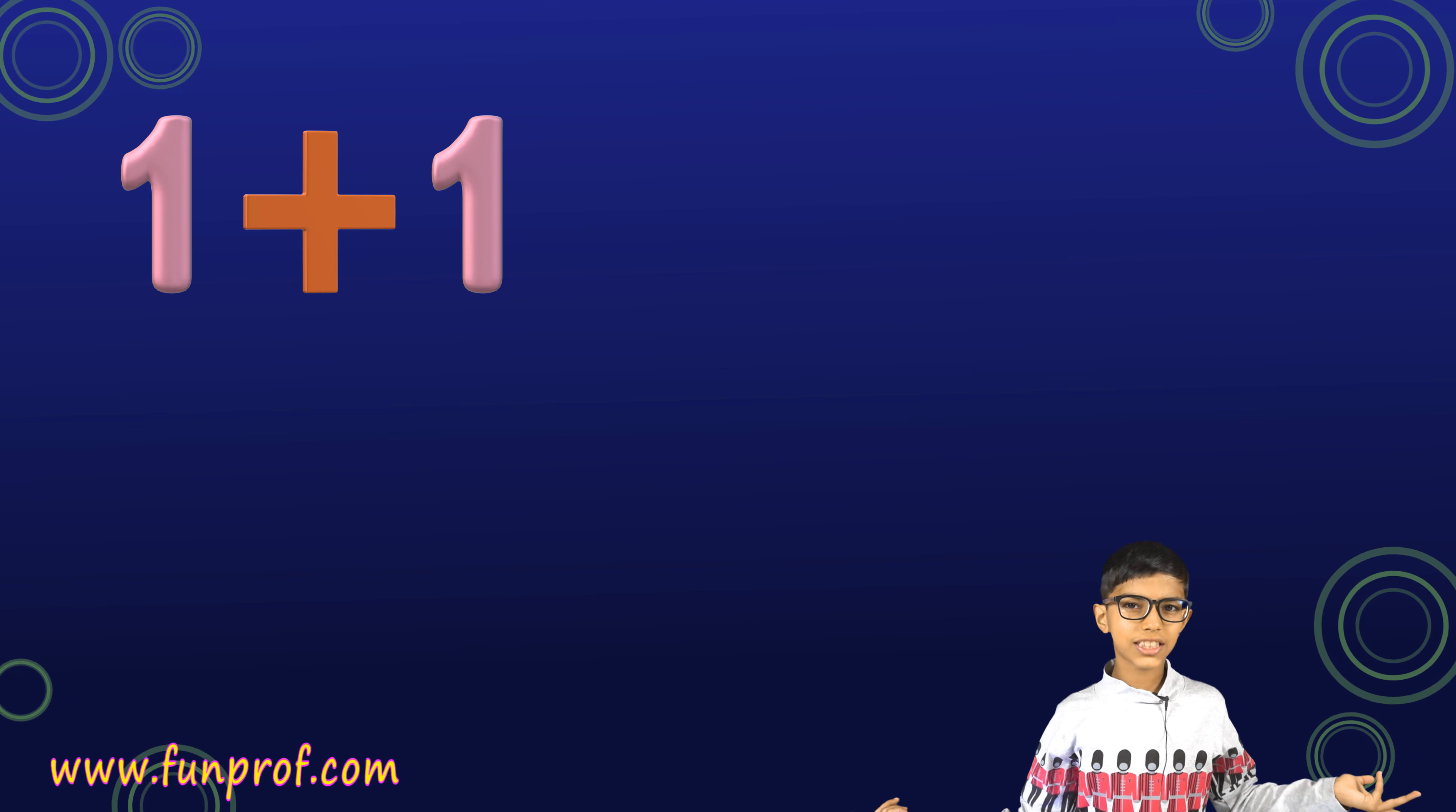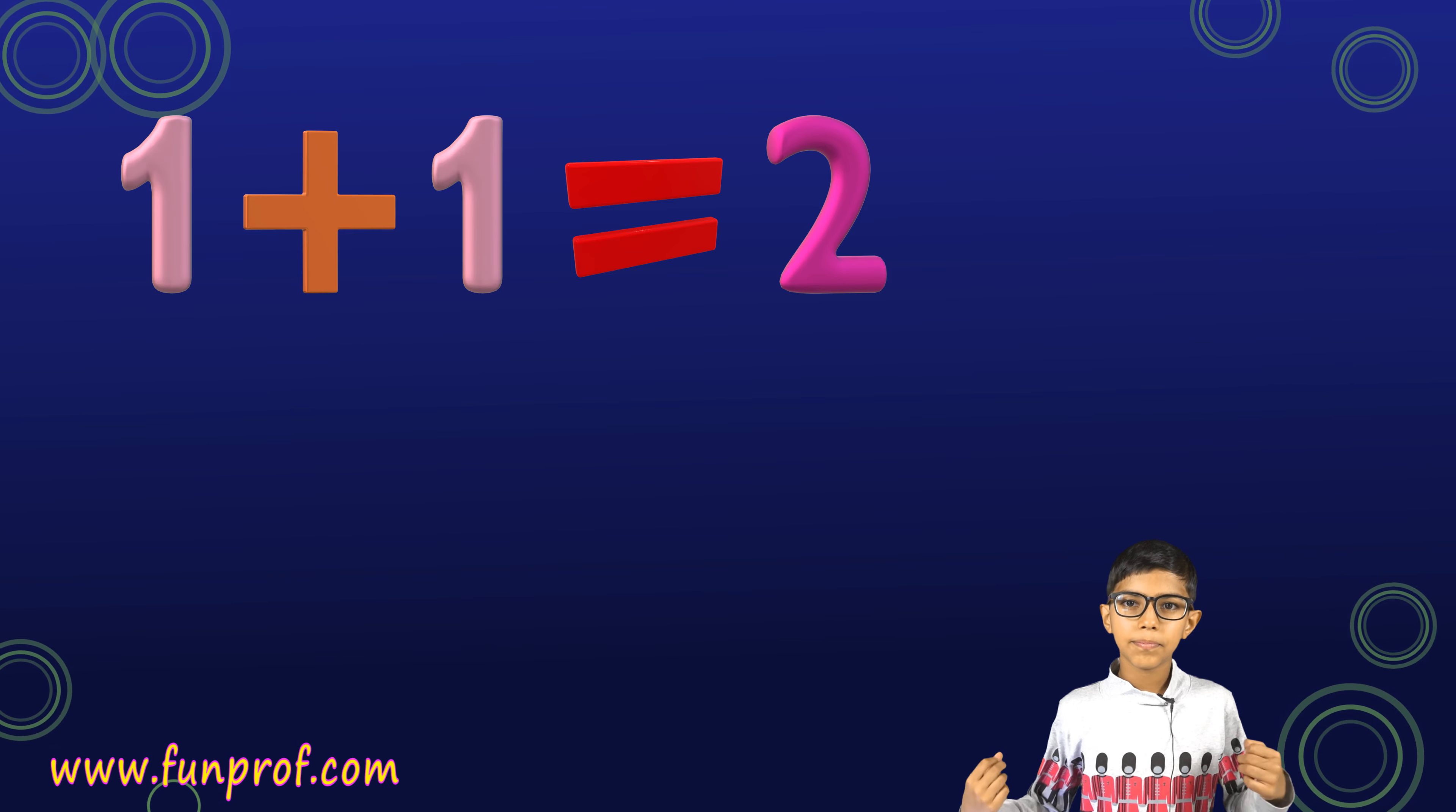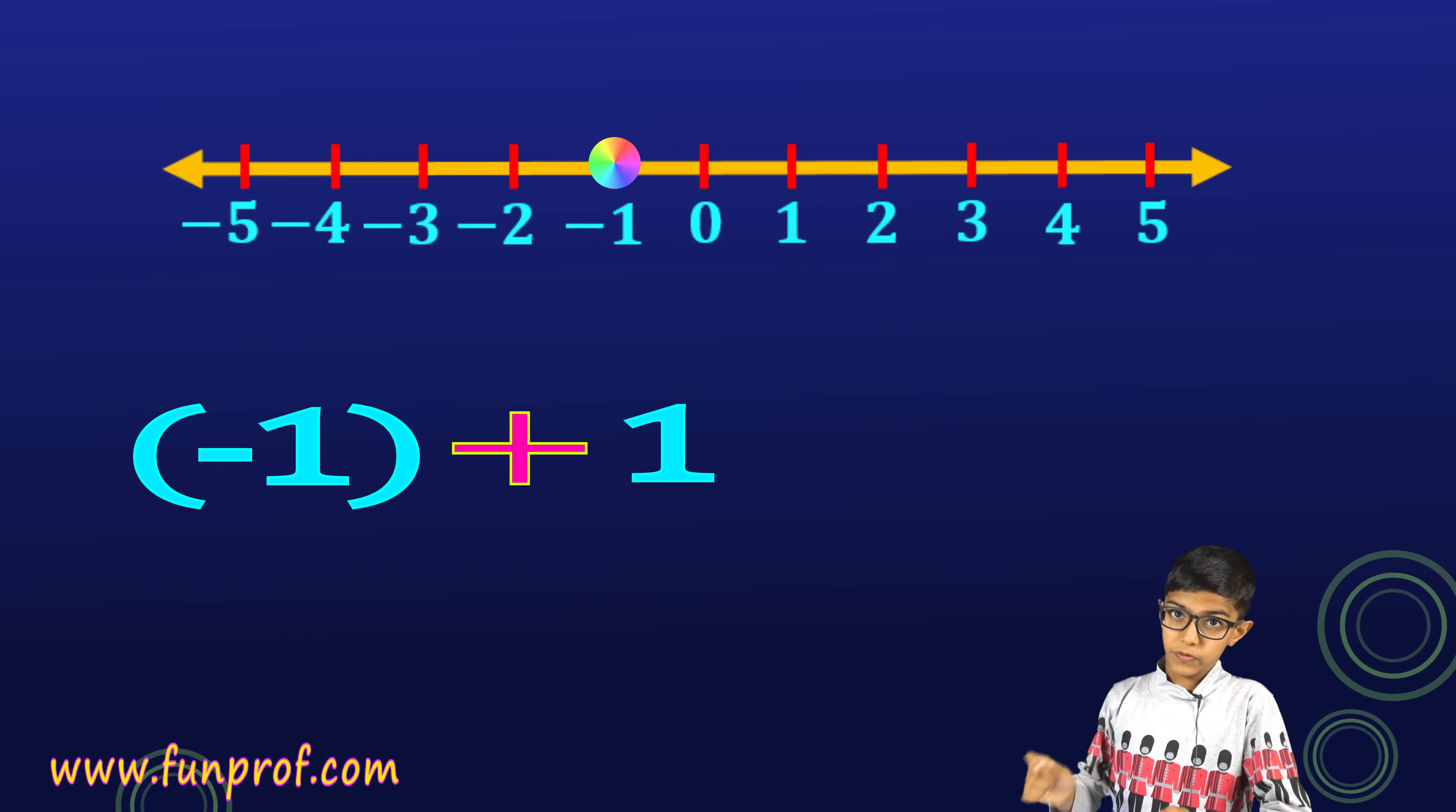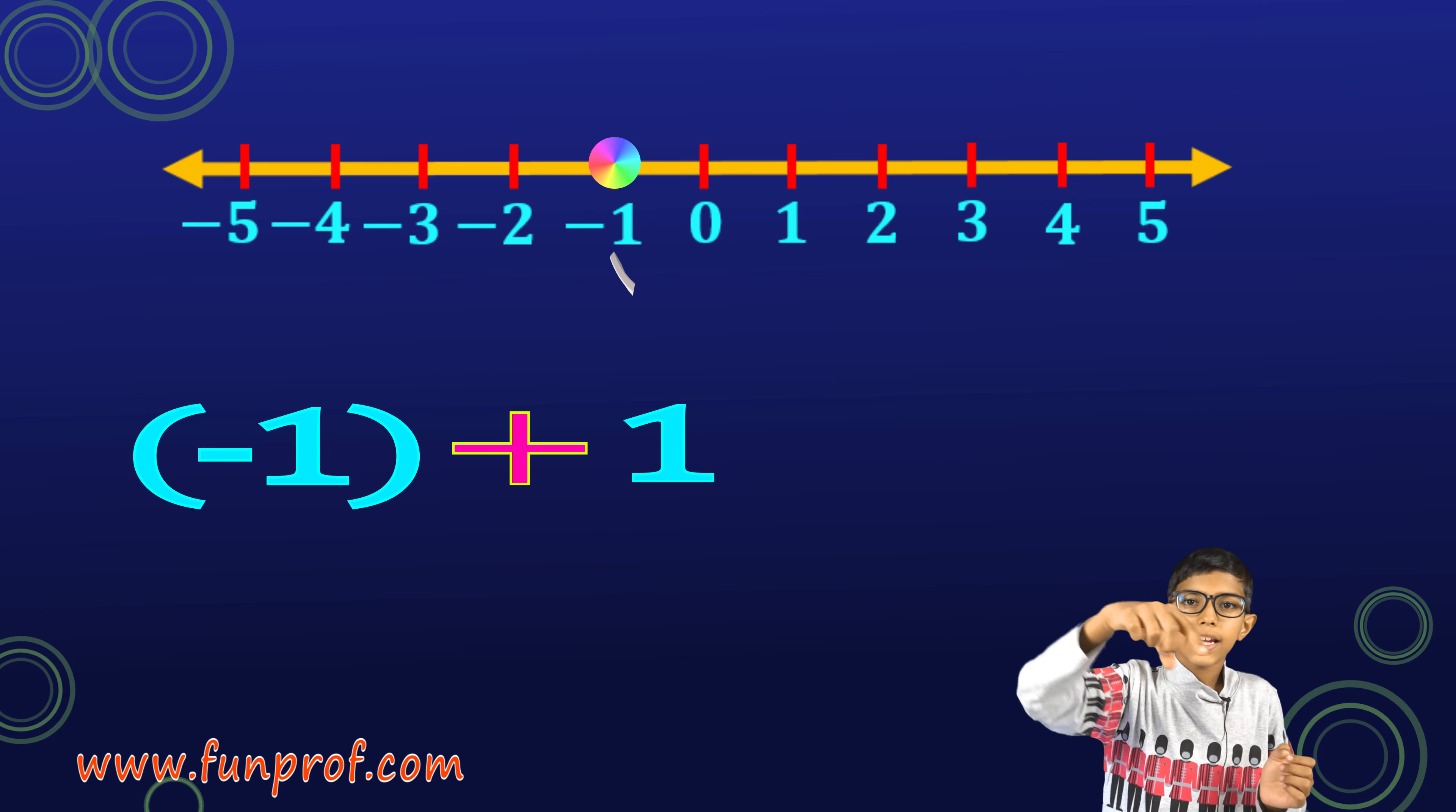Next is addition and subtraction of integers. Now, if I have two integers, let's take 1 and 1. So, it's simple. 1 plus 1, we know it's 2. So, obvious. But, minus 1 plus 1. Now, here on the number line, we are on minus 1.